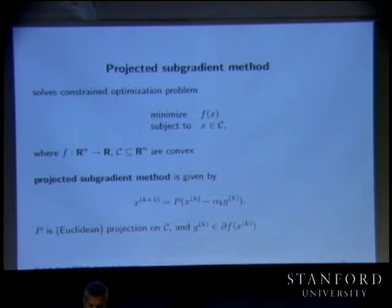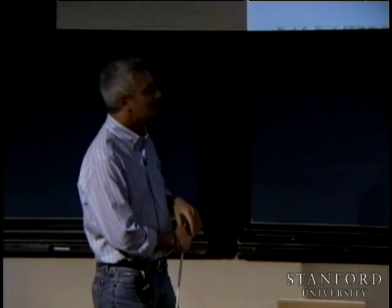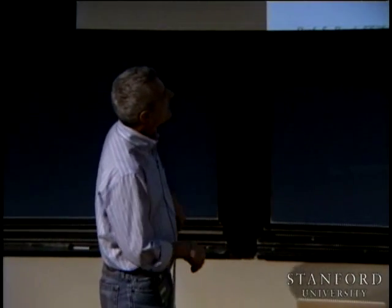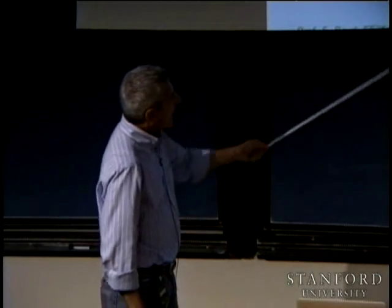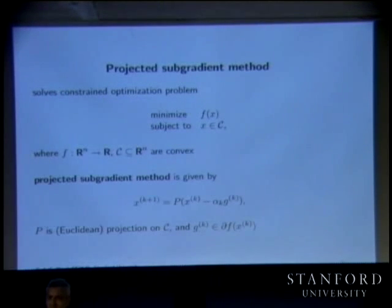There are several cases where projections are easy. Projection on the unit simplex — that's homework three, coming up. Obvious cases are projection on the non-negative orthant, projection onto the cone of positive semi-definite matrices.